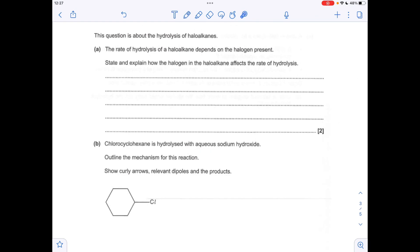Moving on to the next question about hydrolysis of haloalkanes, so we'll state and explain how the halogen in the haloalkane affects the rate of hydrolysis. Remember, the rate of hydrolysis is all linked to the bond enthalpy of the carbon-halogen bond. So the lower the bond enthalpy of the carbon-halogen bond, the faster the reaction.